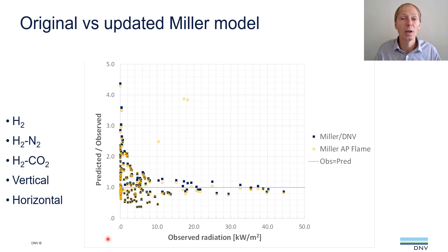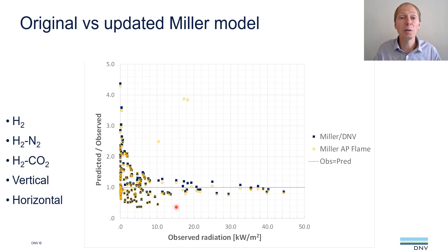Here we see a comparison of the Miller model as presented in the 2017 paper with the updated Miller model in PHAST and SAFETI. The dark blue squares represent the updated Miller model and the yellow circles the original Miller model. Points exactly on 1.0 mean the model predictions match experiment exactly; below 1.0 means under-prediction; above 1.0 means over-prediction. Comparing the two, overall there is very little difference in predictions, however the updated Miller model shows slightly better agreement and in particular fewer under-predictions, making the DNV Miller version slightly more conservative.